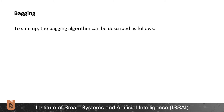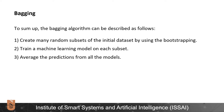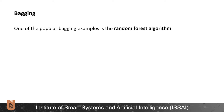To sum up, the bagging algorithm can be described as follows. First, we create many random subsets of the initial dataset by using the bootstrapping technique. Next, we train a machine learning model on each subset. And lastly, we average the predictions from all the models. One of the popular bagging examples is the random forest algorithm.